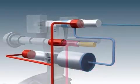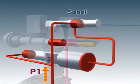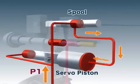Also, the delivery pressure of P1 passes through the spool and pushes against the larger side of the servo piston.